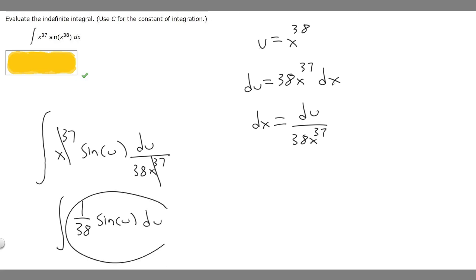And so now what we've got to do is find the antiderivative of this and then plug in u. So the antiderivative of sine of u is going to be minus cosine of u. So if that's minus cosine of u, you just multiply by our constant out front. So minus 1 over 38 times the cosine of u.